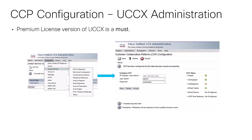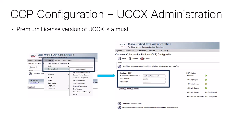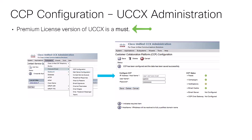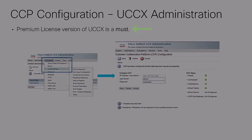Now we move on to the UCCX administration page. This is where you configure the CCP to be recognized by UCCX. In the CCP configuration menu, you add the CCP's IP address or FQDN along with the administrator credentials. A very important note: you must have premium licenses to enable the agent's chat and email feature. If you do not have these licenses, the chat and email subsystem menu will not even appear.